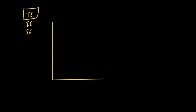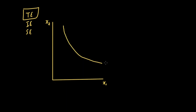The total effect is basically the gross effect of a price change on the optimal quantity that the consumer should consume. If we have an indifference map with x1 on the horizontal axis and x2 on the vertical axis, and utility level u0 with a budget line, the point of tangency gives us the optimal quantity of good one, which is x1 star.